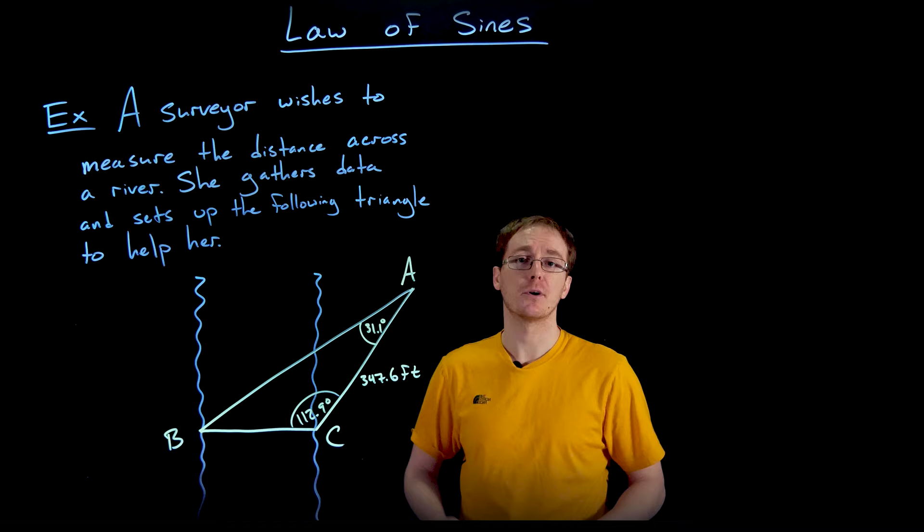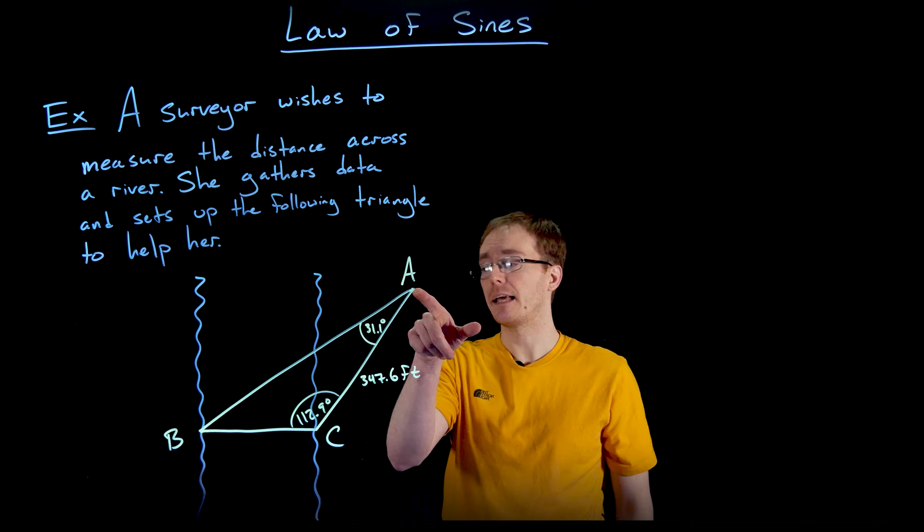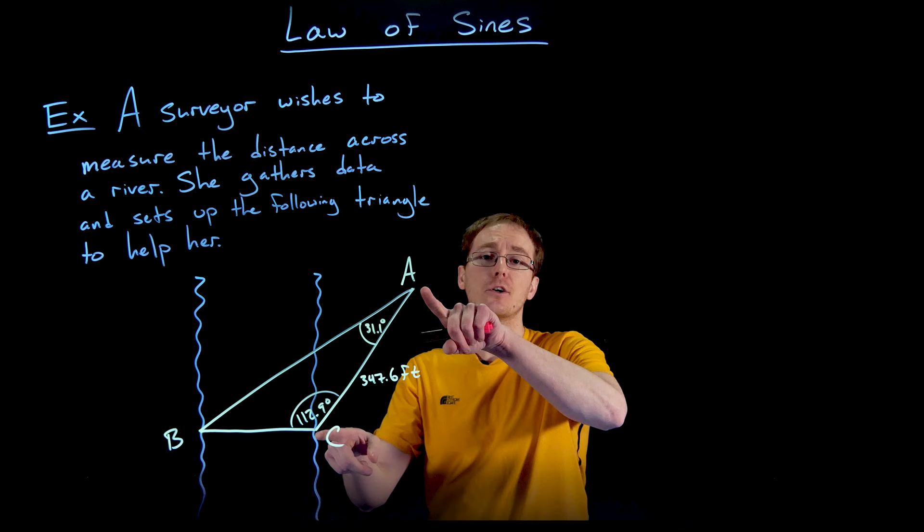All right, so these two wiggly lines represent the two sides of the river. The surveyor stood at point A and then walked down to the bank at point C. The surveyor measured how far it took her to walk from point A to point C, and that's about 347.6 feet.